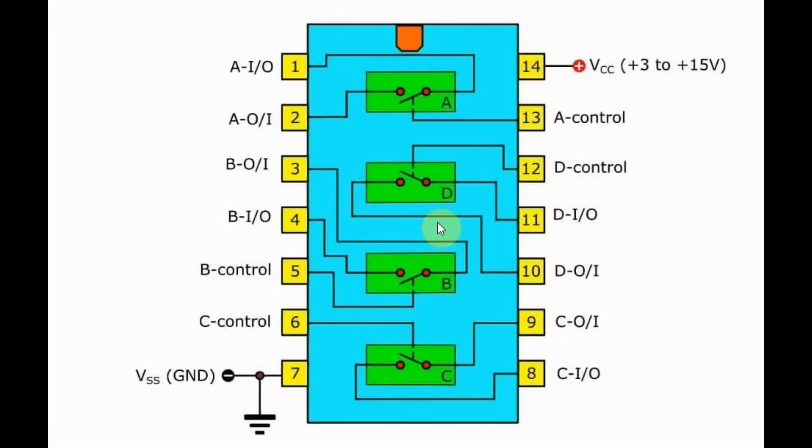A pin diagram of the 4066 IC is shown here. We have four electronic switches. Each switch is controlled by a separate control line. So a logic 1 will close the switch, and a logic 0 will open the switch. Each switch is bi-directional.